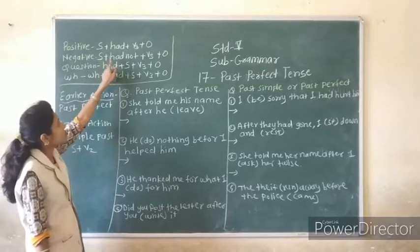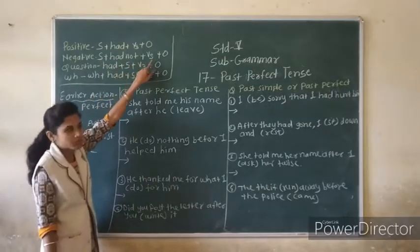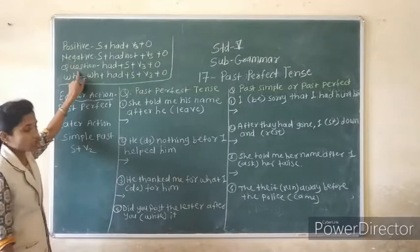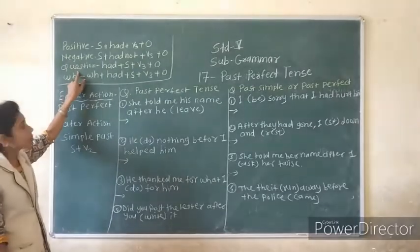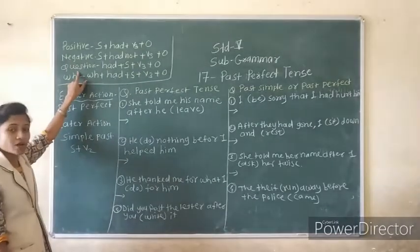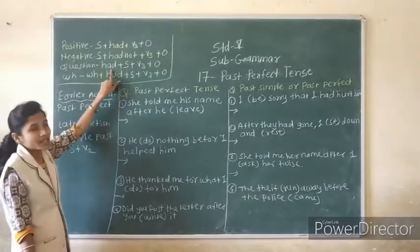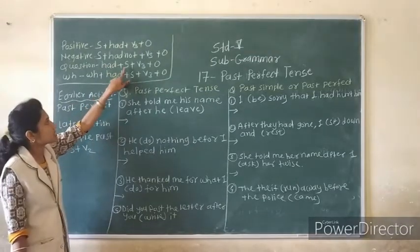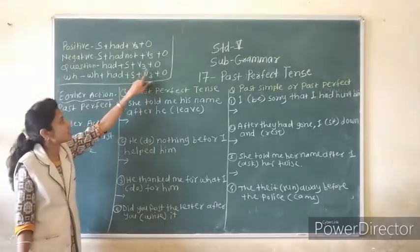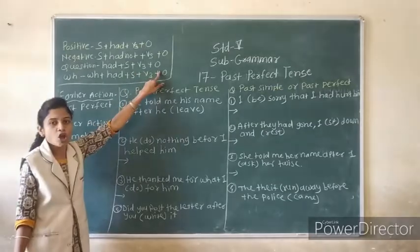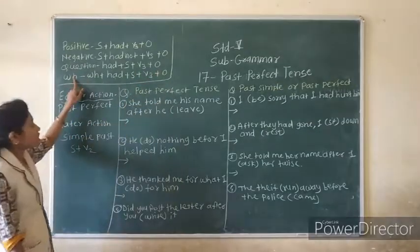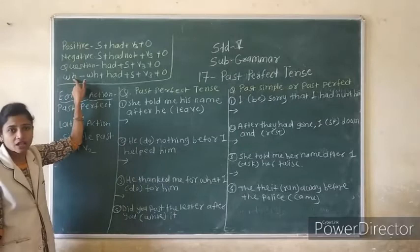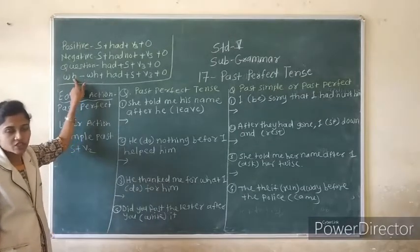For questions, the formula is: Had plus Subject plus verb 3 plus Object. Now for WH questions — where, how, when — these are the WH question words.